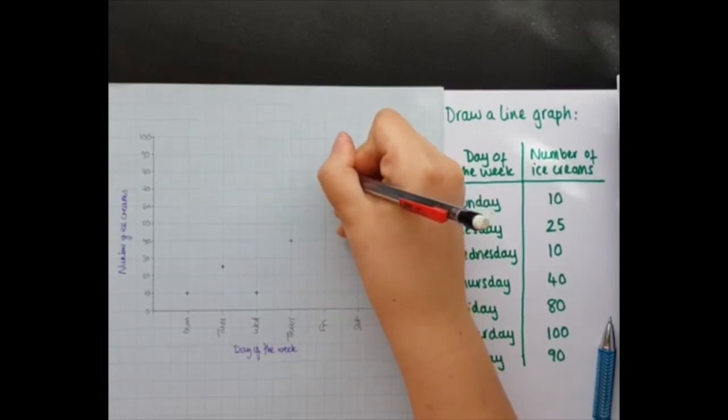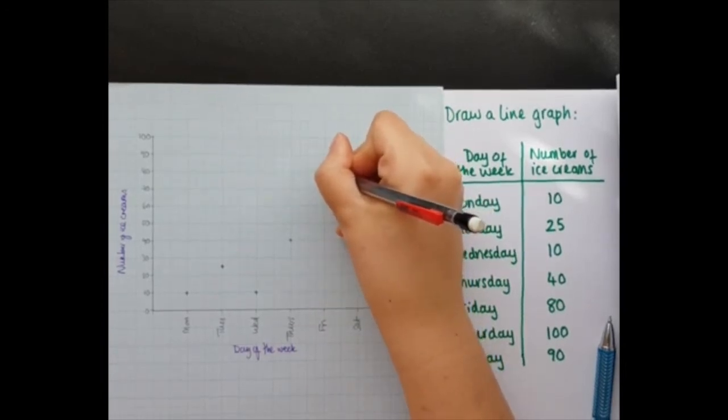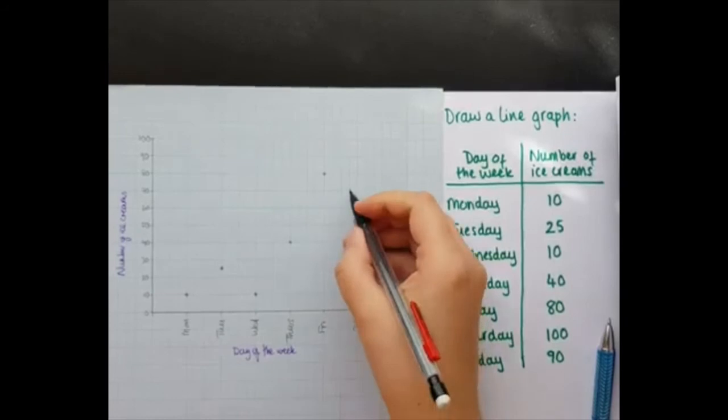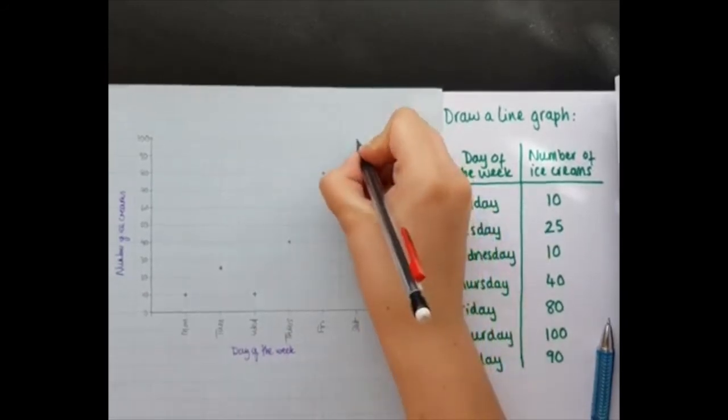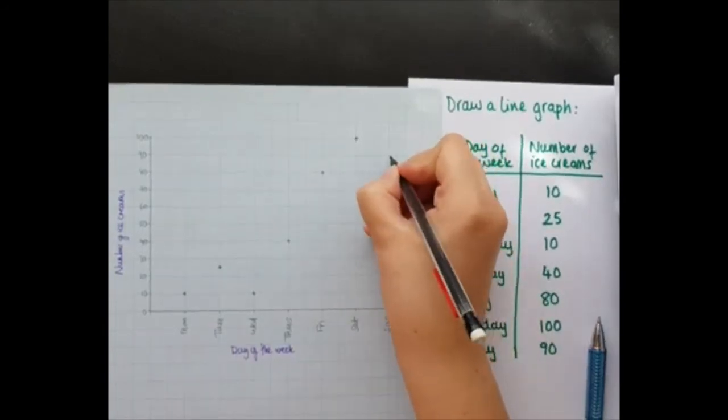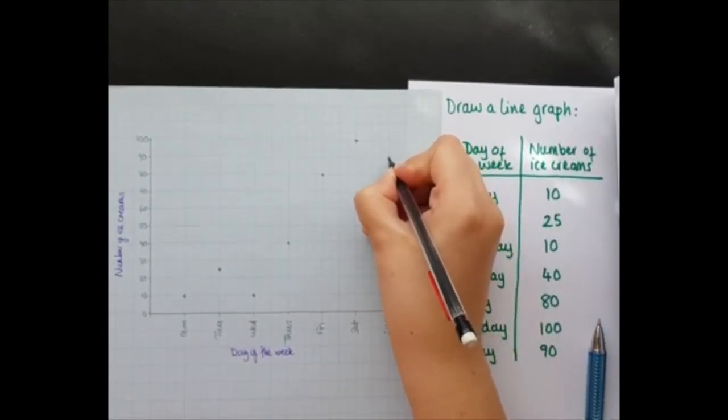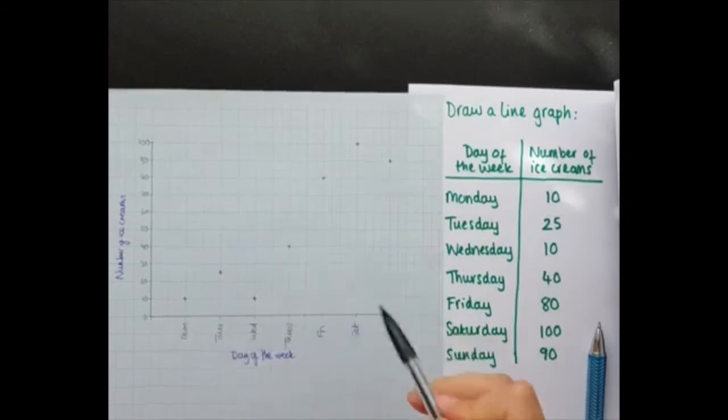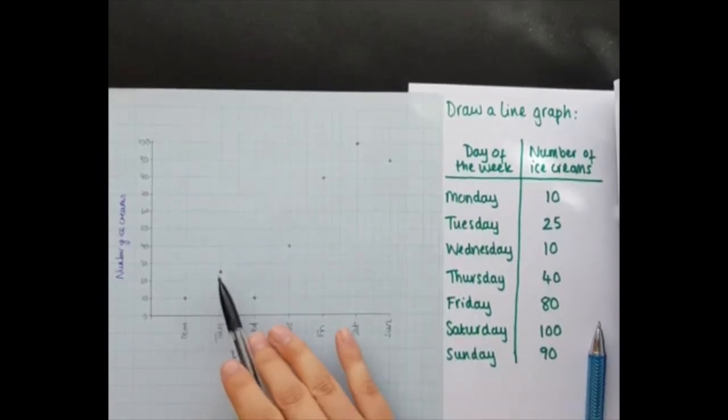So we're going all the way up to 80 for Friday. For Saturday, we sold 100. And for Sunday, we sold 90. There we go. Now you can see that I have a set of points.